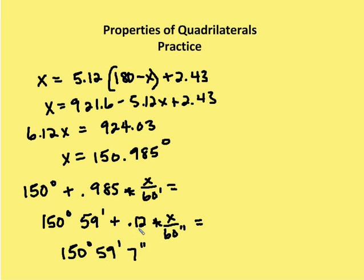And I get that the value of 0.12 minutes is equal to seven seconds approximately. So I say 150 degrees, 59 minutes, and seven seconds, which is my answer. Moving on to the second problem.